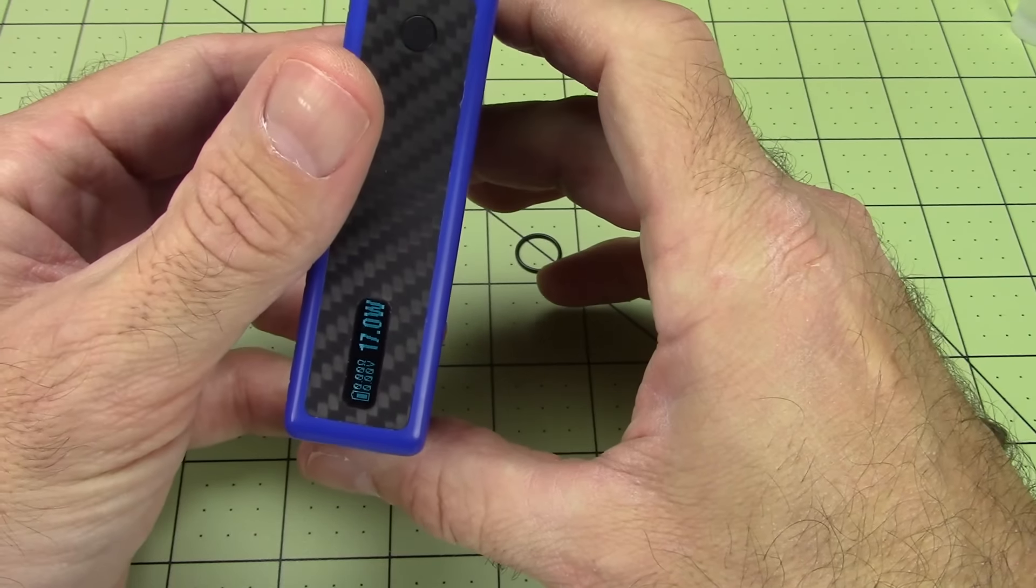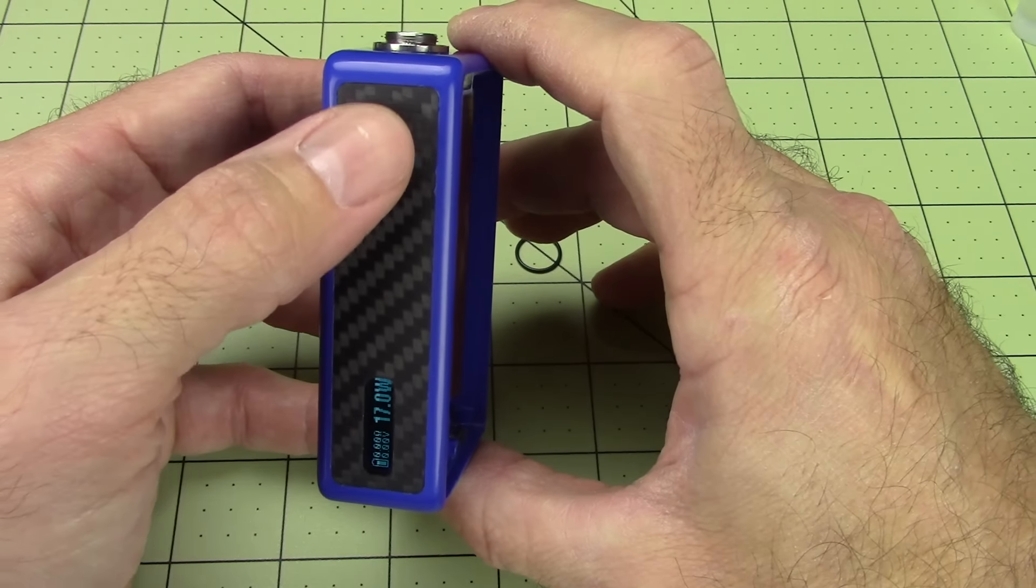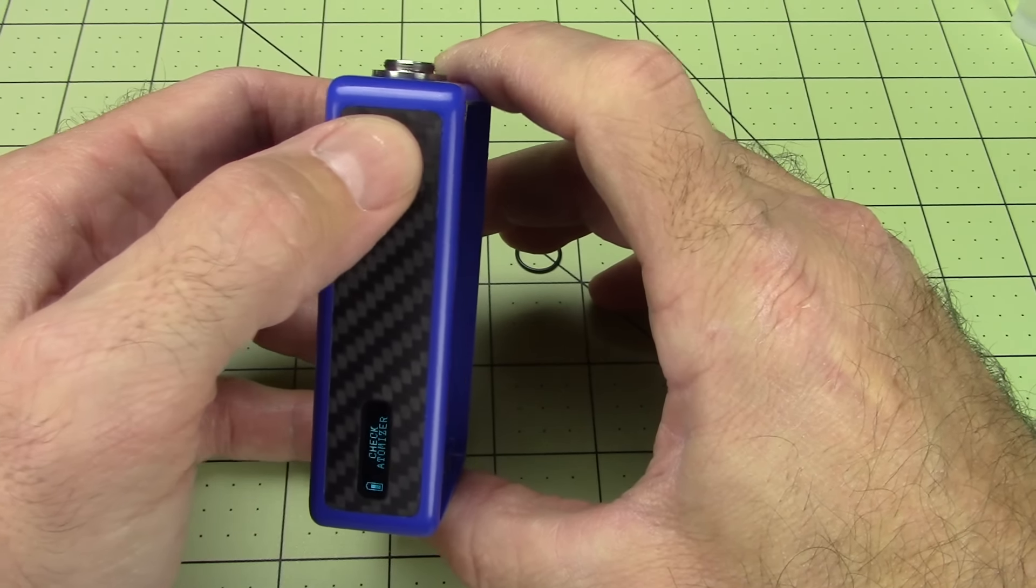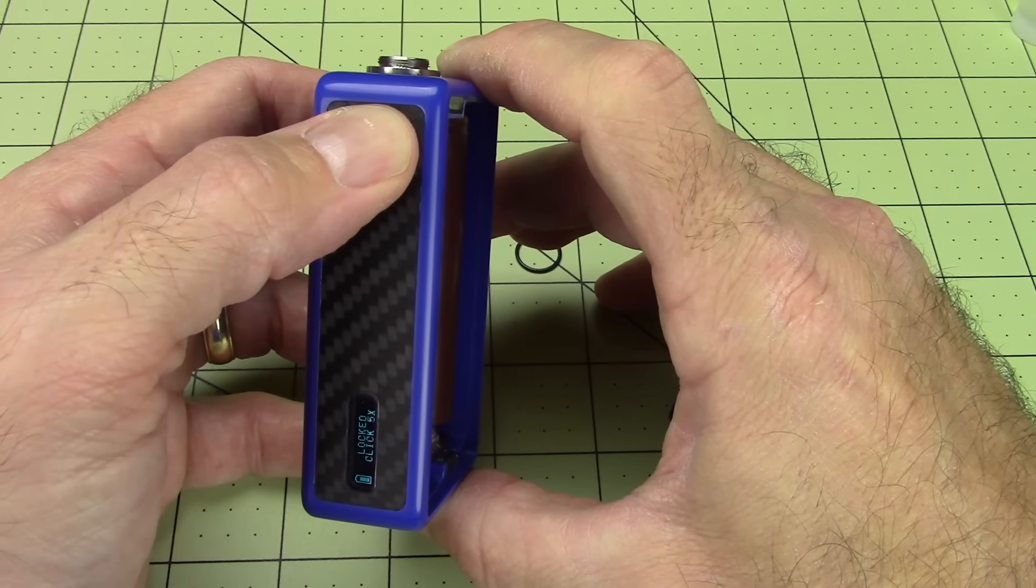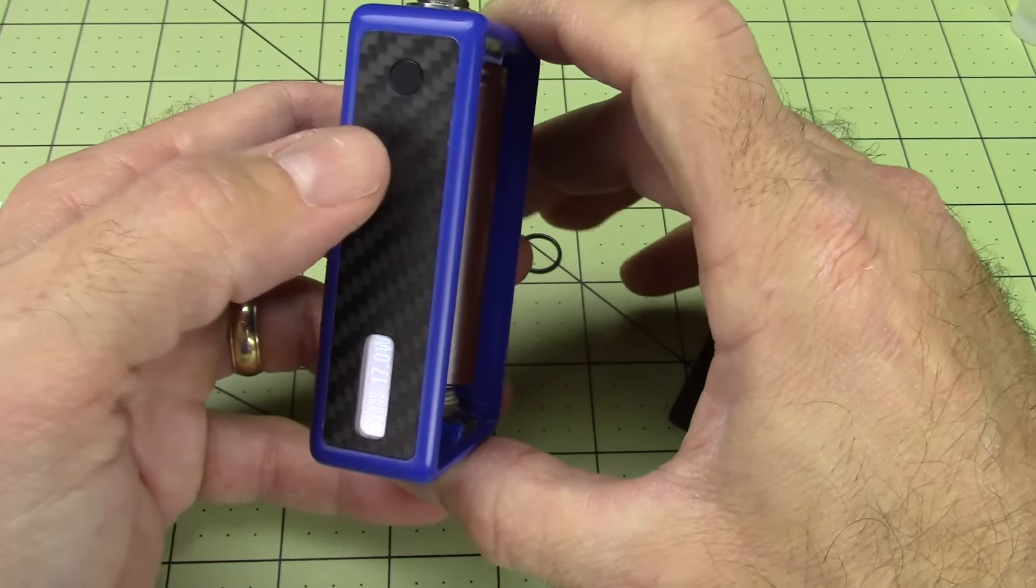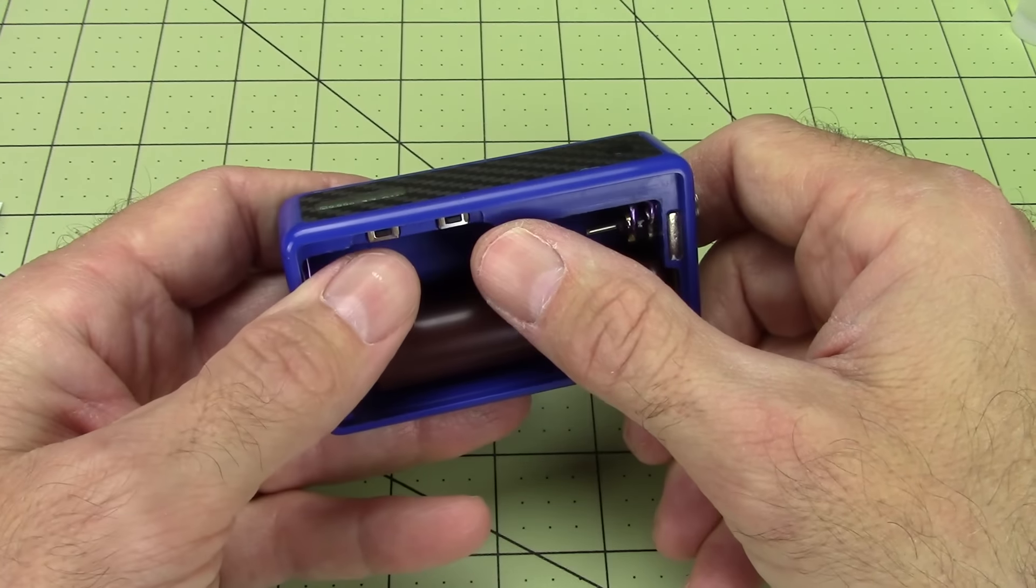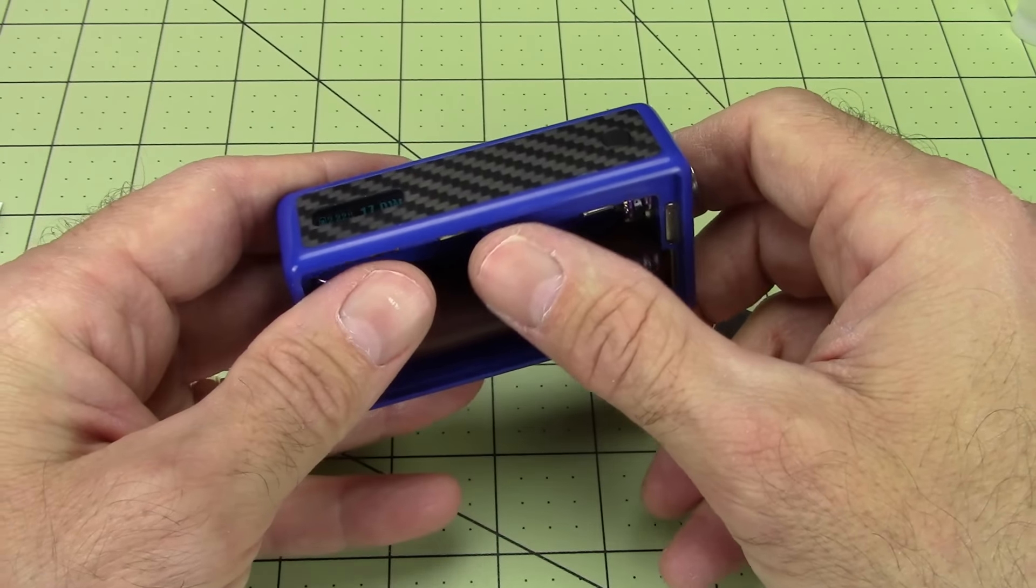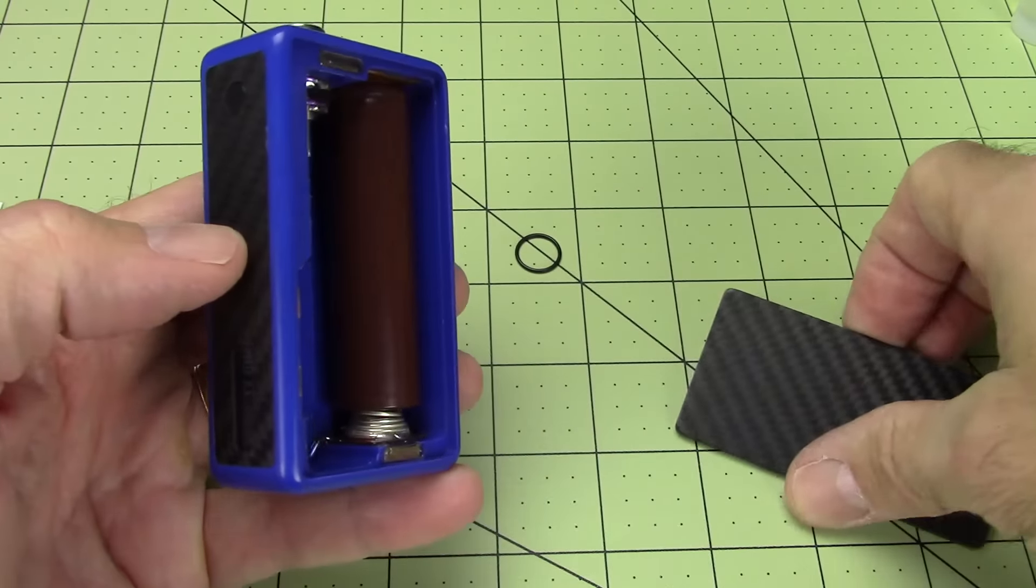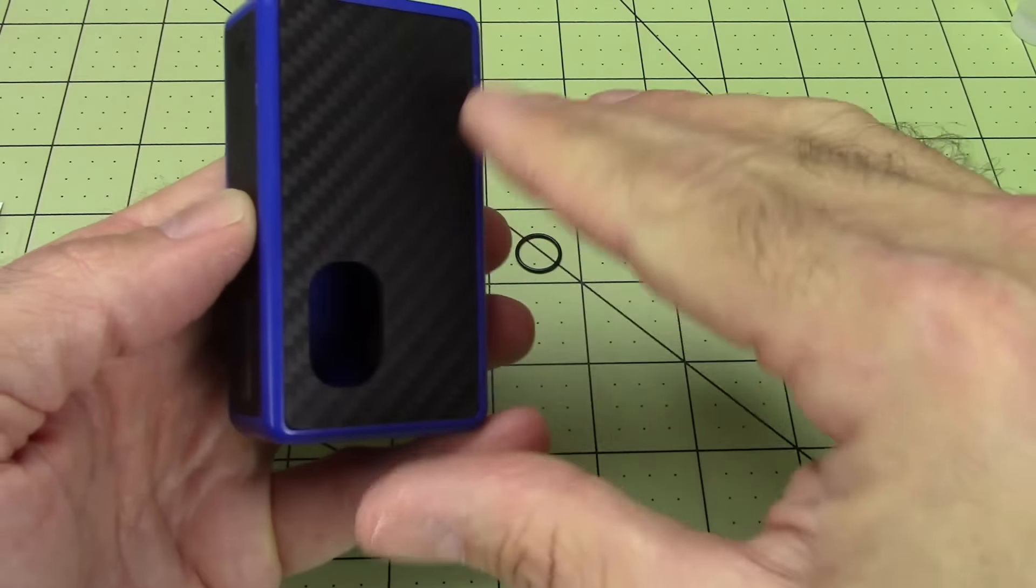So, again, here's your DNA40 small screen. Fire button. Locks with five presses. Unlocks with five presses. No atomizer on it right now. So, there you go. Up, down, temp control, stealth, normal mode features. All that stuff are accessed by these buttons. That will be concealed behind the door. Or front panel.